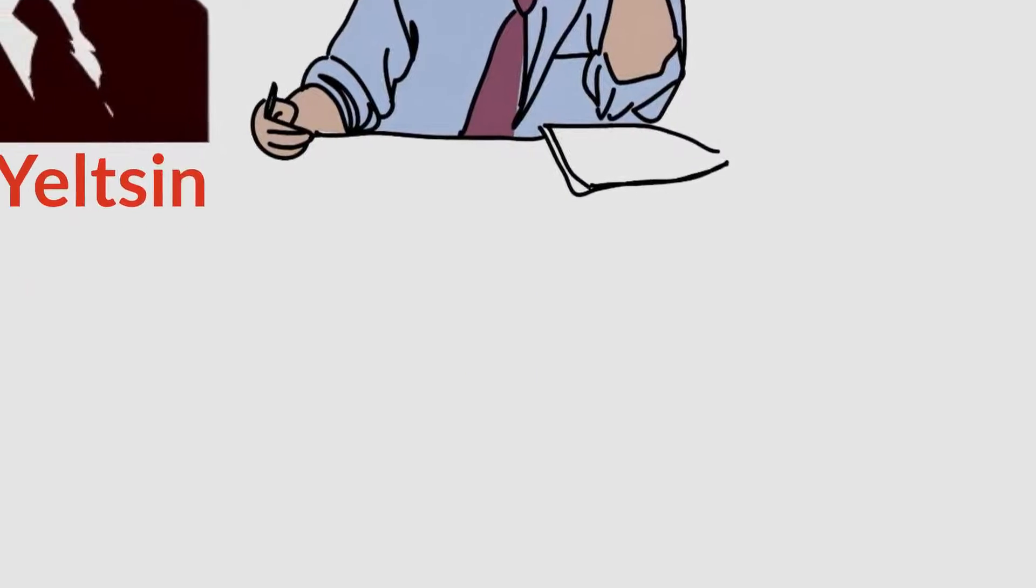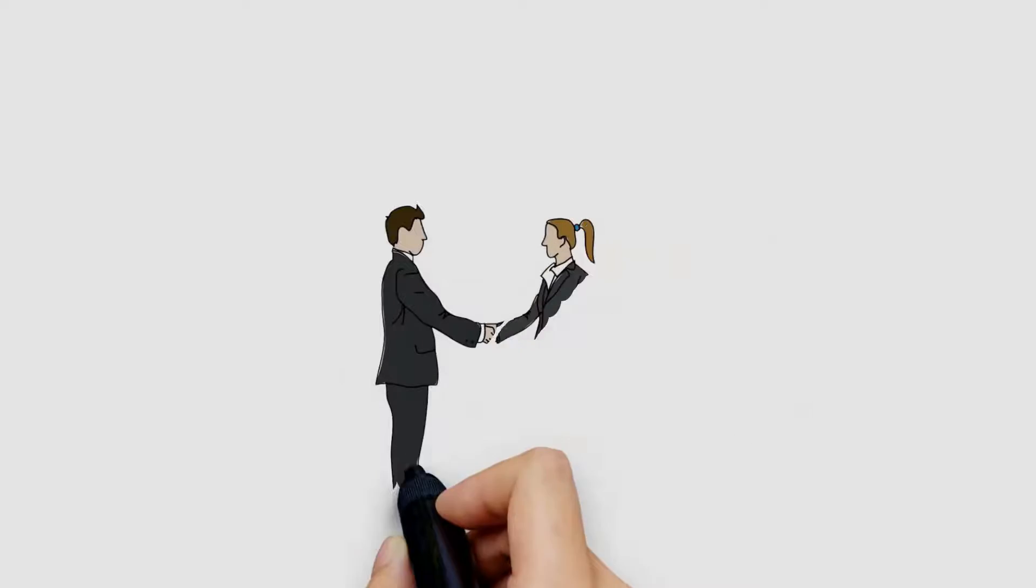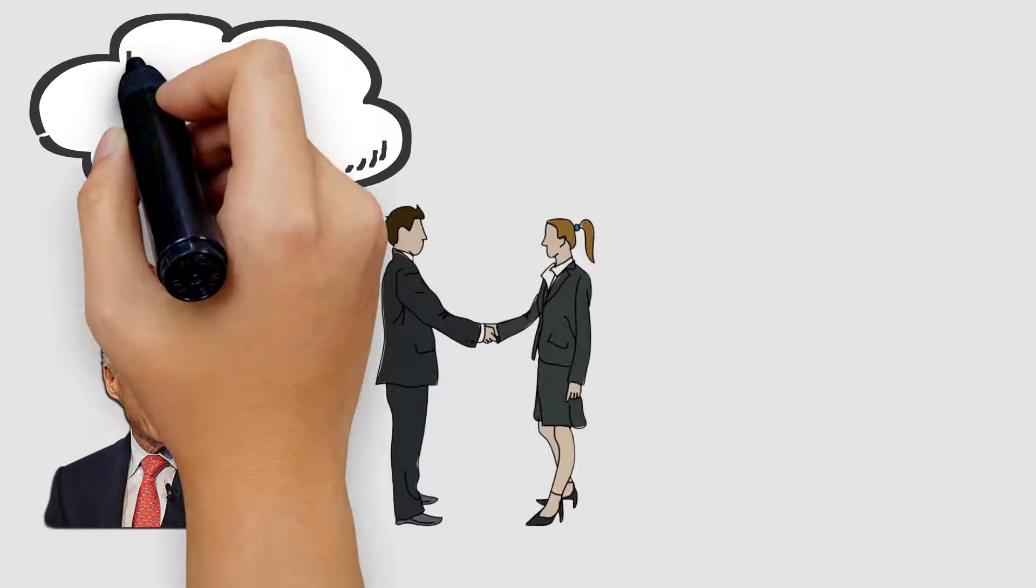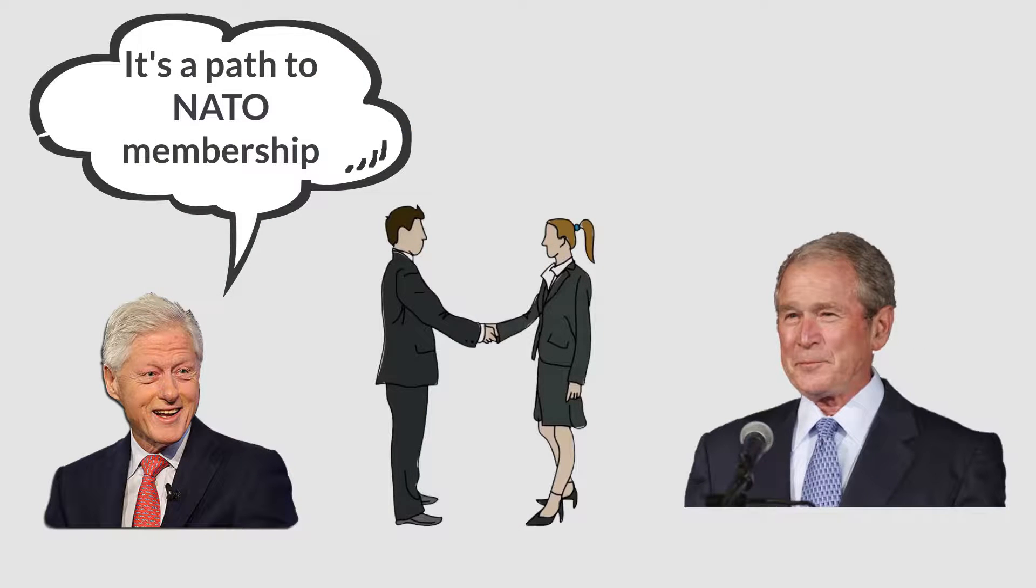A few years later, when Russia signed the so-called Partnership for Peace treaty, U.S. President Bill Clinton said it's a path to NATO membership. By the time of President Bush, Russia's membership of NATO continued to be evaluated.